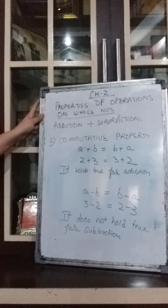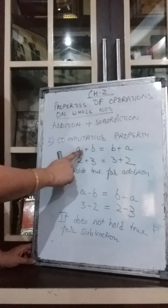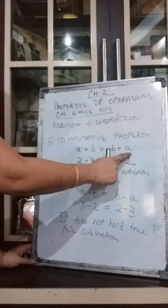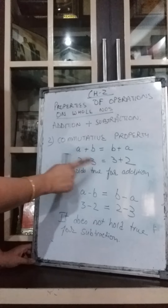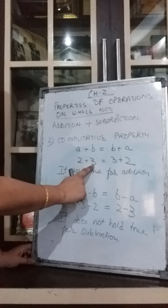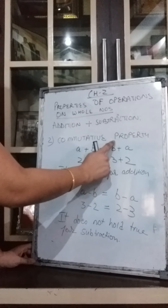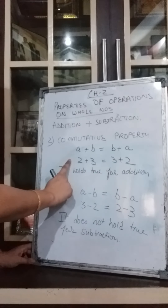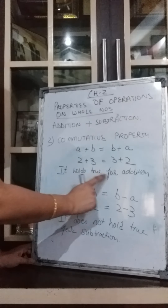The second property is commutative property. It means that if A and B are two whole numbers, then A plus B is equal to B plus A — we are just changing the position of the numbers. Let us check for addition: take A as 2 and B as 3. 2 plus 3 gives 5. Changing positions: 3 plus 2 also gives 5. Left hand side equals right hand side, so commutative property holds true for addition.